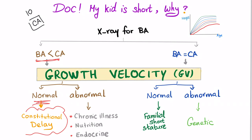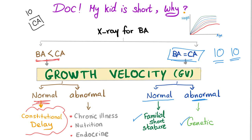If the x-ray shows bone age equals chronological age — both are 10 — then again look at the percentile curve. If the child is growing parallel to the curves, this is called familial short stature. If not parallel, it's usually a genetic problem. Next we'll talk about tall stature and cover constitutional delay and familial short stature in separate videos.